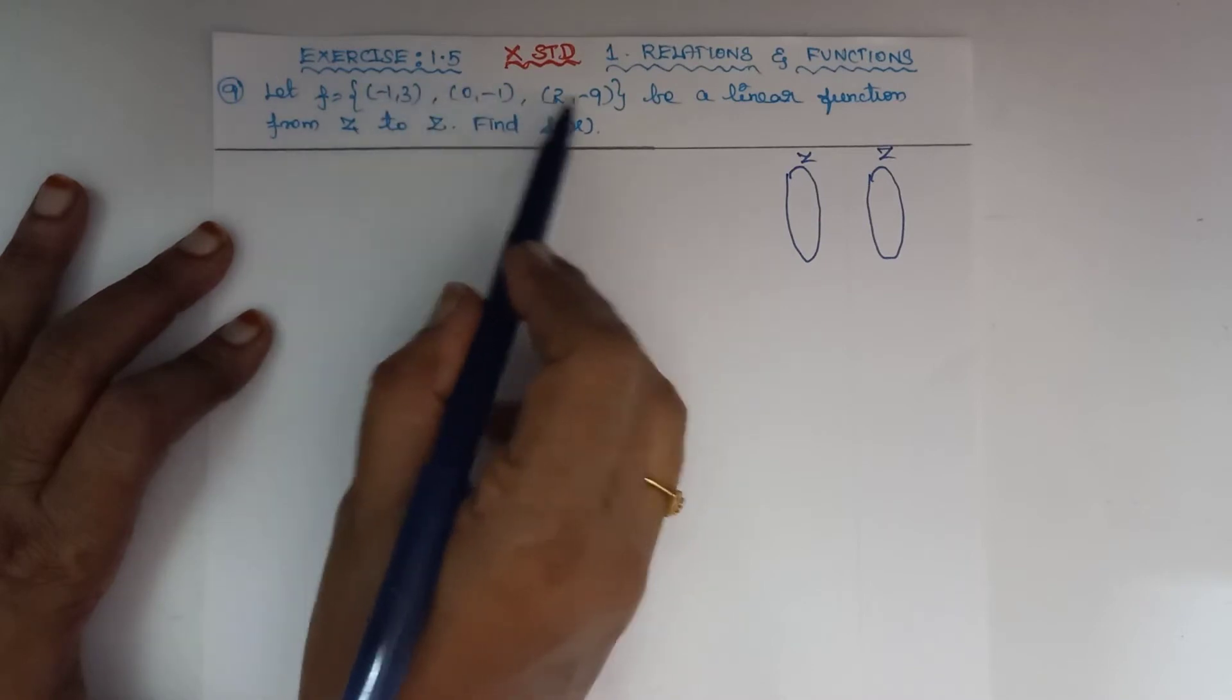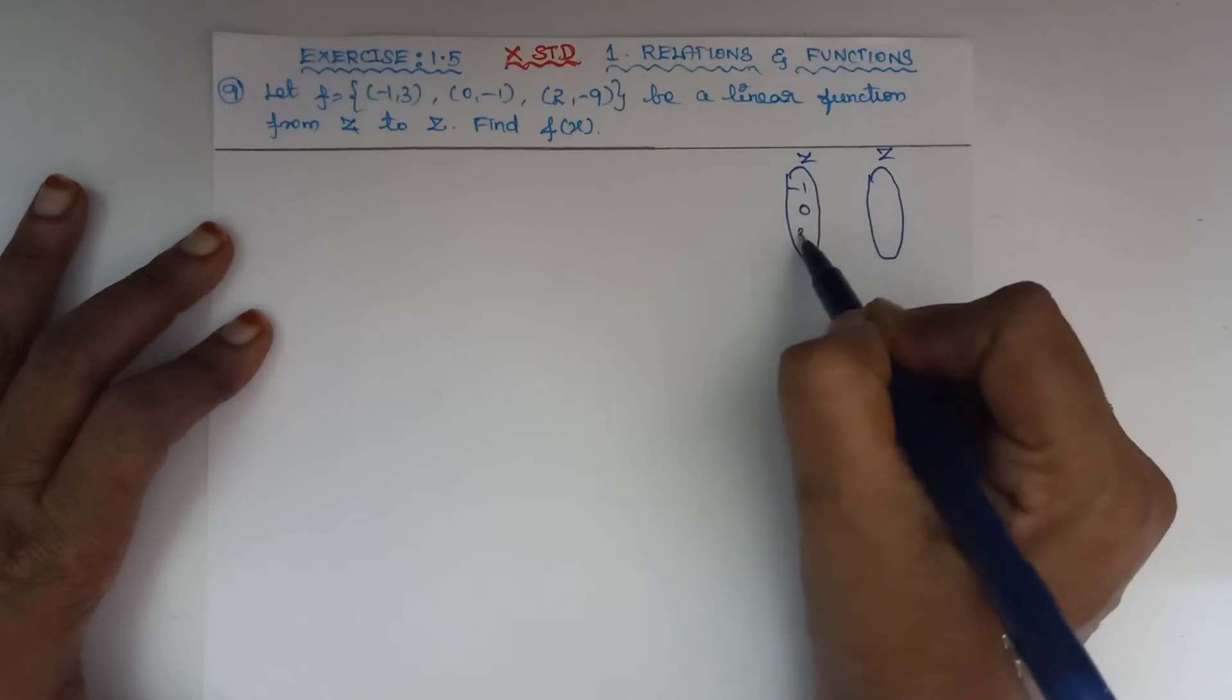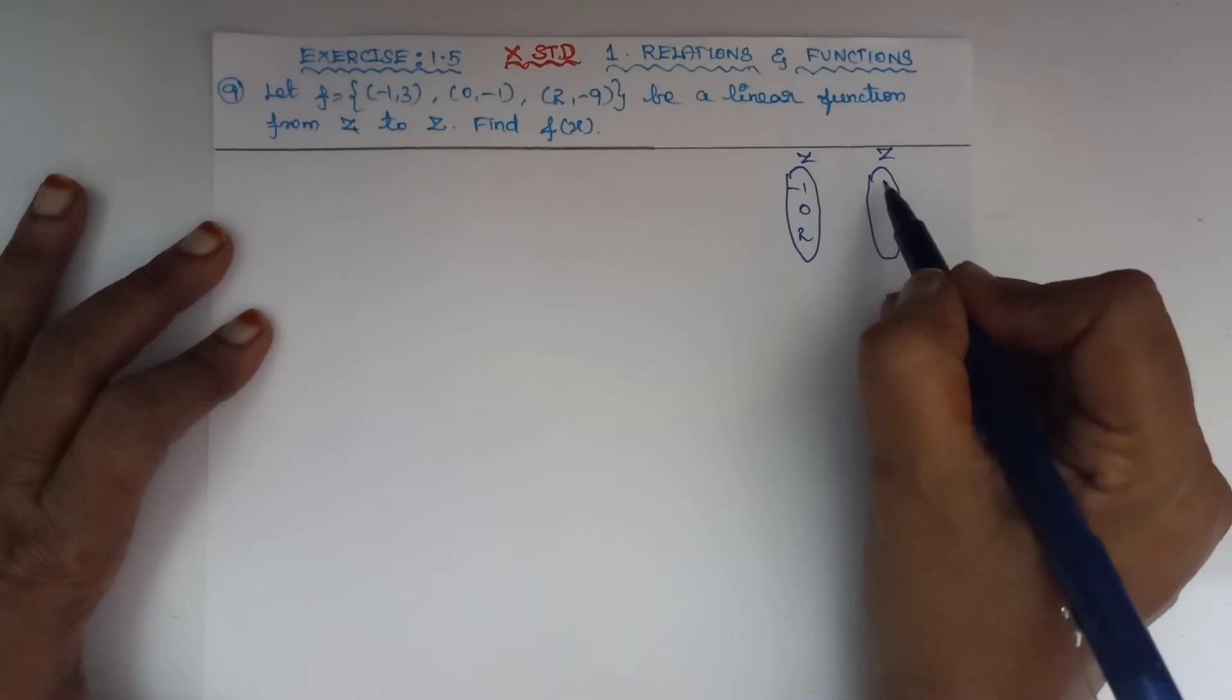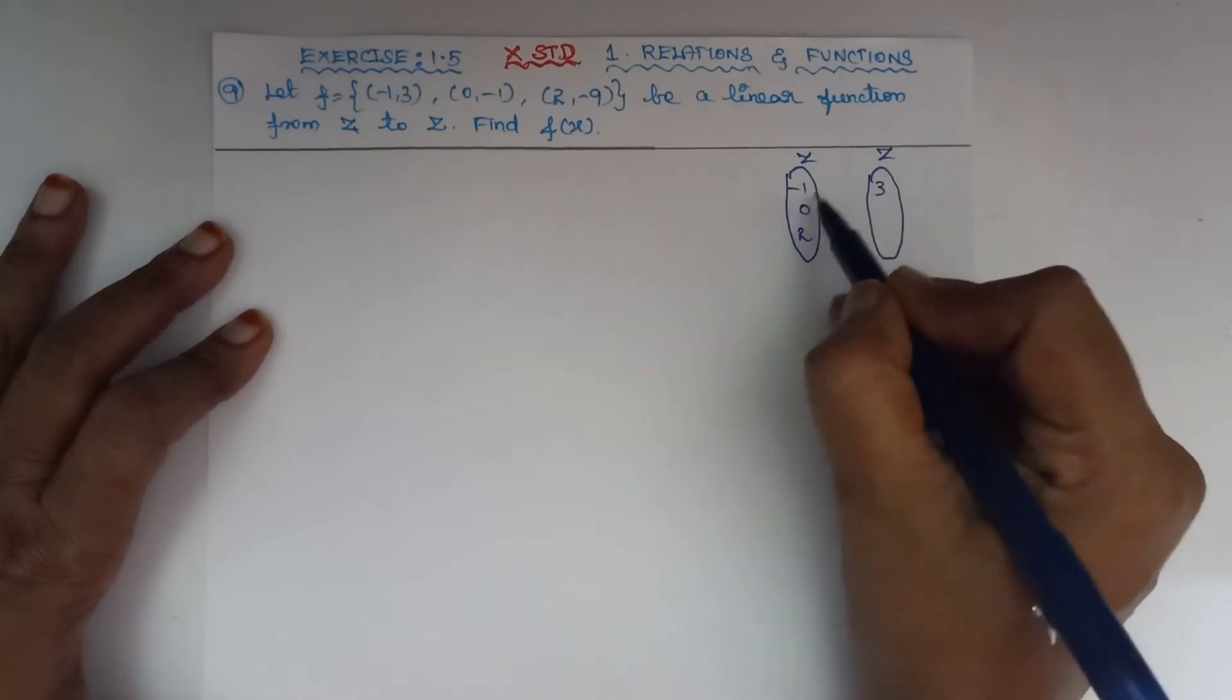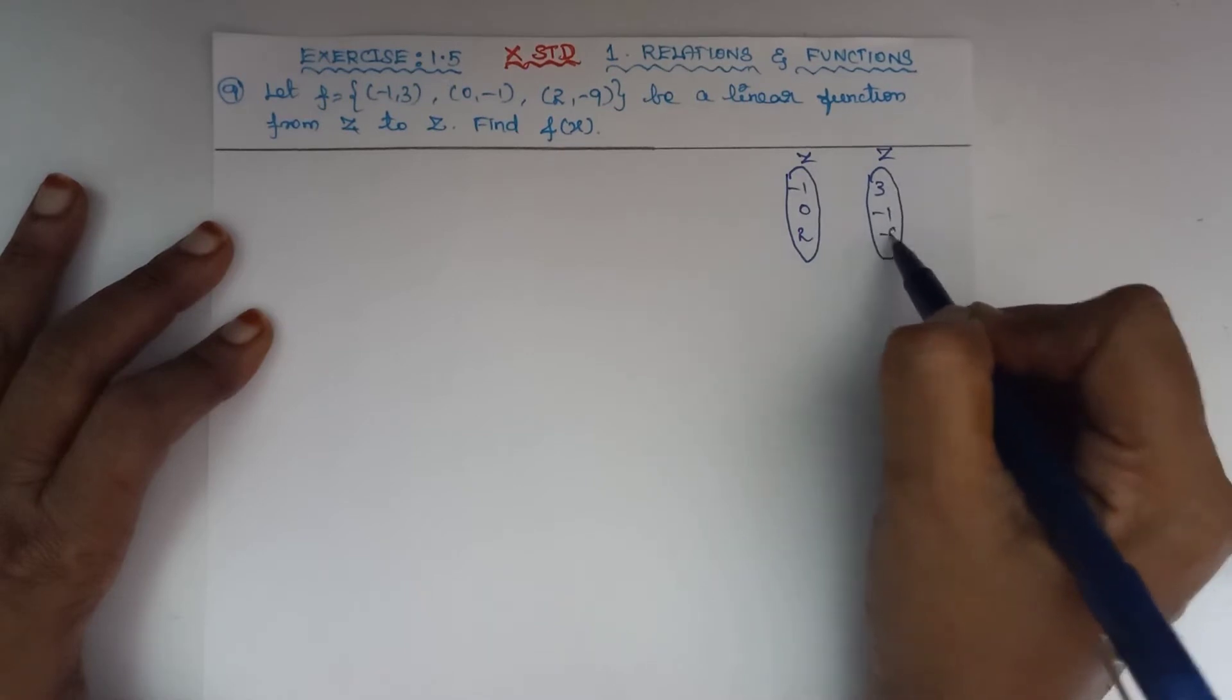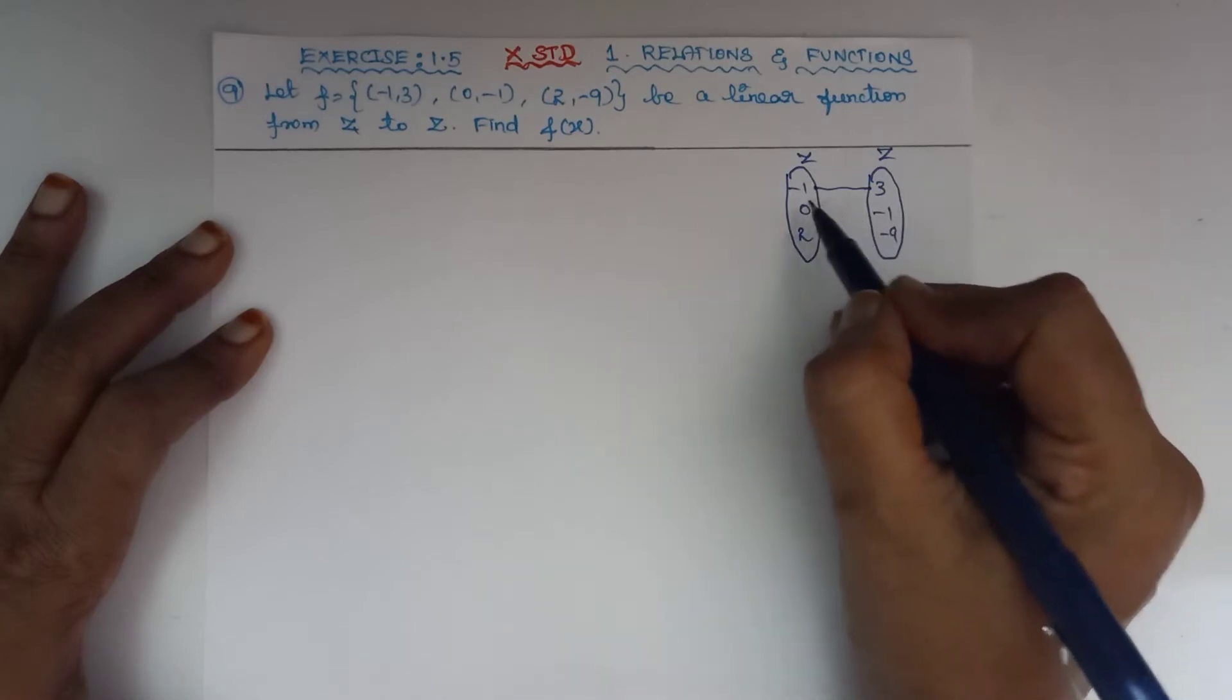In the ordered pairs, the first element is from the domain: -1, 0, 2. The second elements are from the range in the codomain. The domain elements are mapped or associated with these elements: -1 maps to 3, 0 maps to -1, and 2 maps to -9.